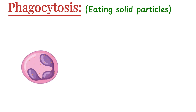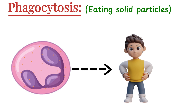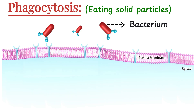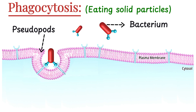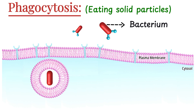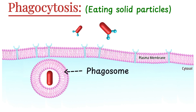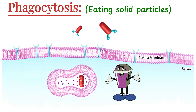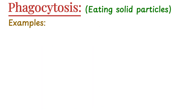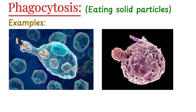Phagocytosis is like the cell's way of eating solid particles, and it's especially important for cells that protect our body, like white blood cells. Imagine a large, dangerous intruder like a bacterium or dead cell fragment floating outside. The cell detects it and responds like a warrior — it sends out extensions of its membrane called pseudopods. Once the particle is fully wrapped, the cell engulfs it into a large vesicle called a phagosome. This phagosome then fuses with a lysosome, which is packed with powerful digestive enzymes, and they break down the harmful material or recycle what's useful. Phagocytosis is mostly carried out by specialized cells like macrophages and neutrophils, and it plays a vital role in immune defense.